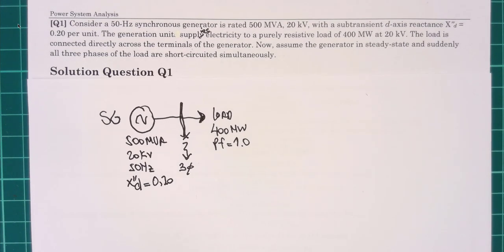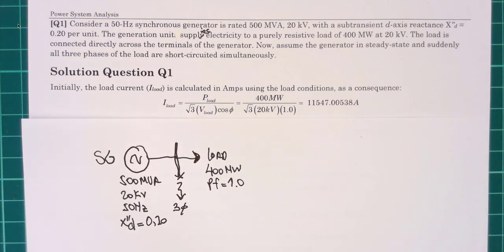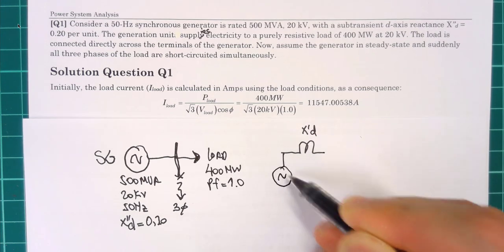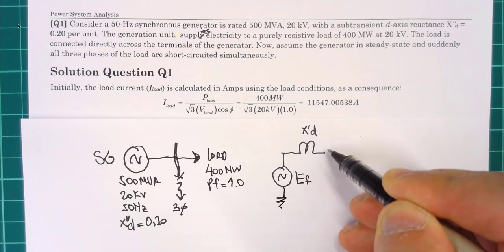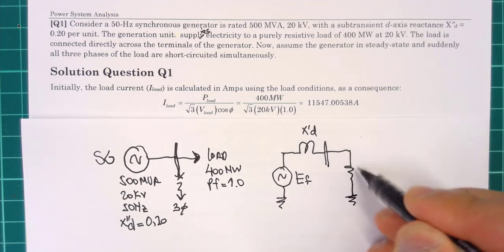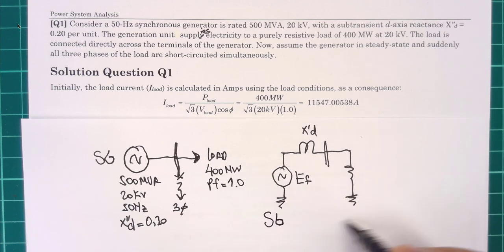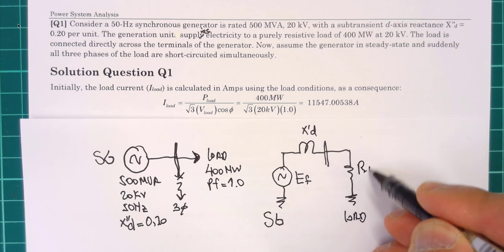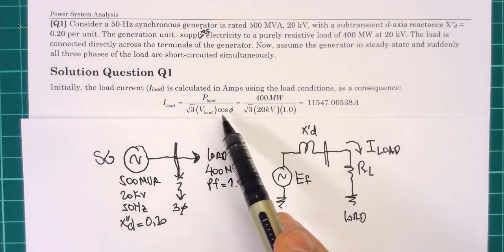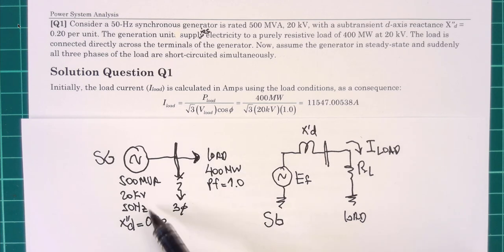We want to find the subtransient short circuit current. We start with the equivalent circuit: we have an internal voltage, a bus bar, and the resistive load. The load current flows when the generator supplies this load at power factor one and line-to-line voltage of 20 kV.